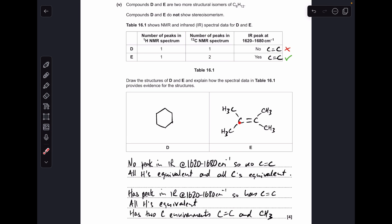Moving on to compound E, it does have a carbon-carbon double bond, and all the hydrogens are equivalent. Two types of carbon. You've got the carbons in the double bond as one type. You've got the carbons of the CH3s as a second type of carbon.